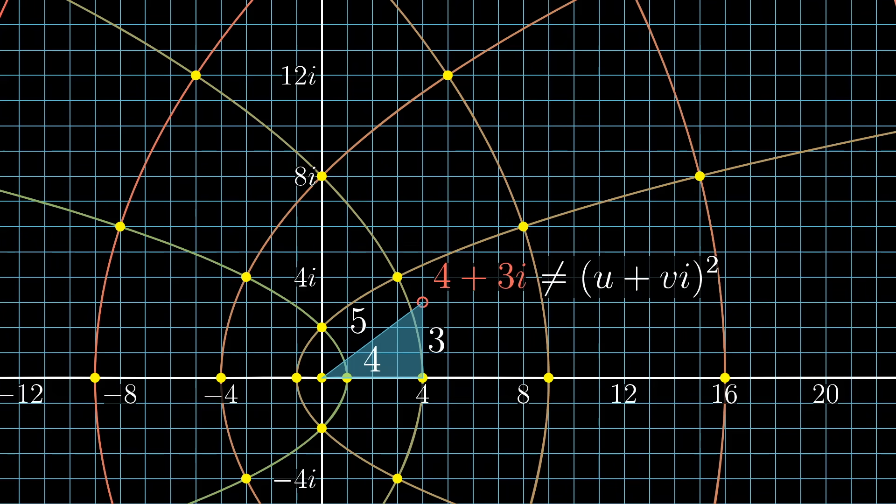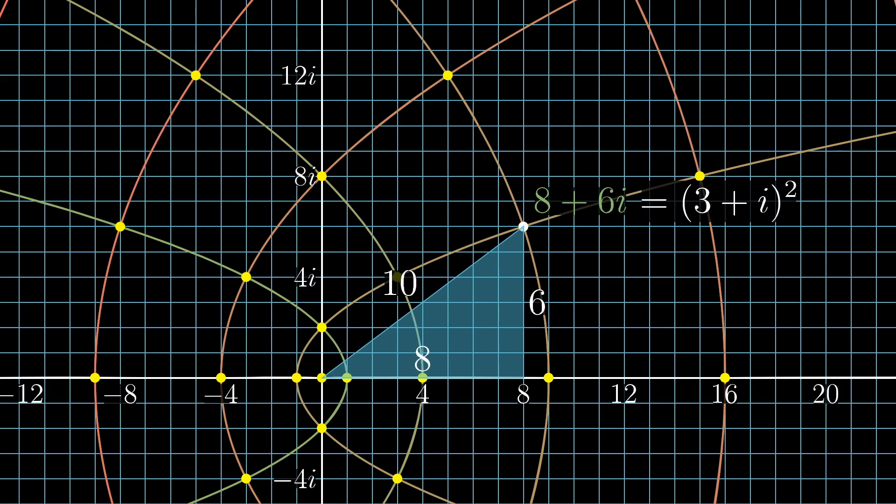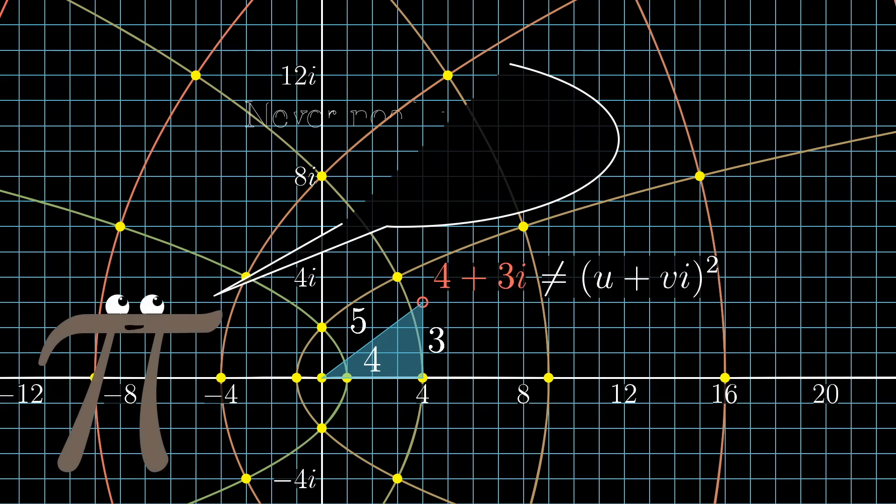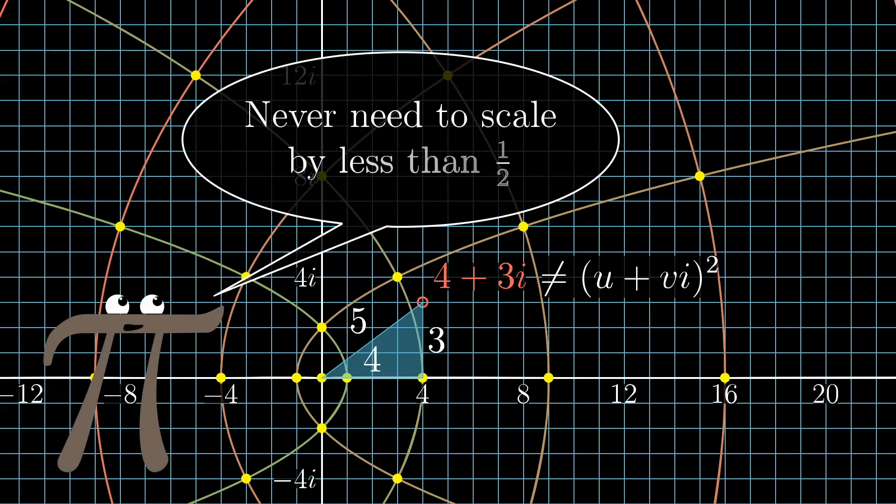However, we do hit 8 plus 6i, that's 3 plus i squared. So even though we miss 4 plus 3i, it's just 1 half times a point that we do hit. And by the way, you'll never have to scale down by anything smaller than 1 half.